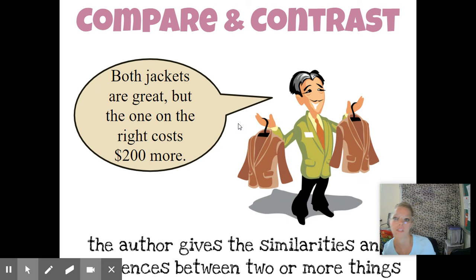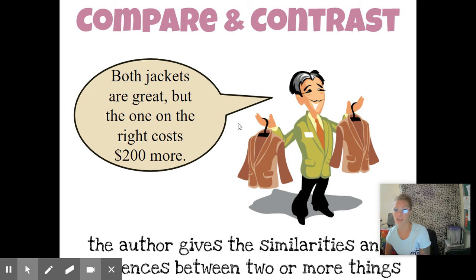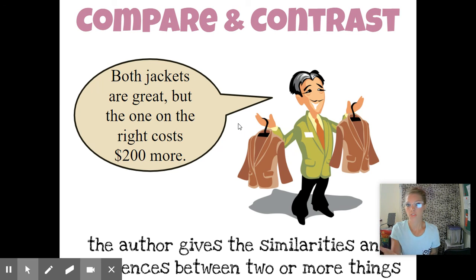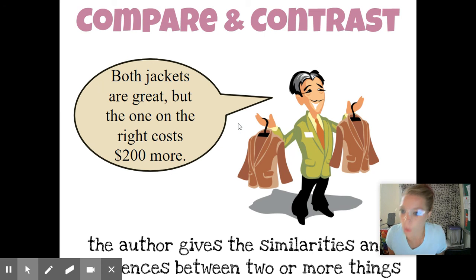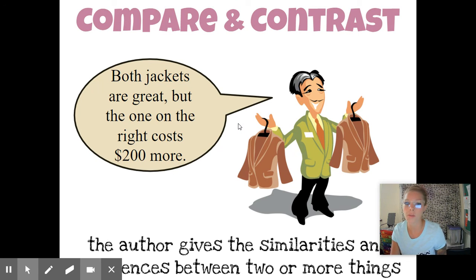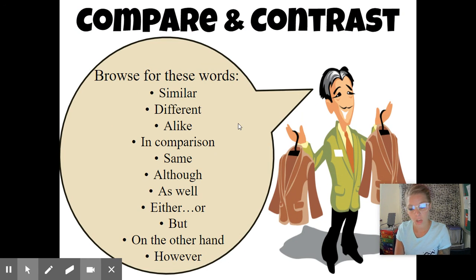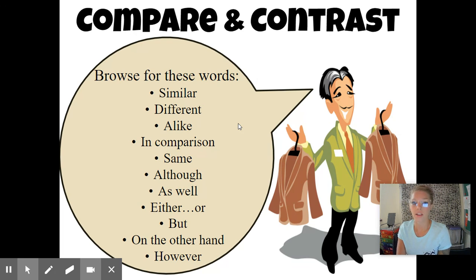Now the last one I want to talk about is compare and contrast. Compare and contrast is usually easy to spot if there are two different things being discussed. For this example, it says 'both jackets are great, but the one on the right costs $200 more.' So we're still talking about jackets — they look very similar, but one is a little bit cheaper than the other. You want to look for words like 'similar,' 'different,' 'alike,' 'in comparison,' 'same,' 'although,' 'on the other hand,' etc.